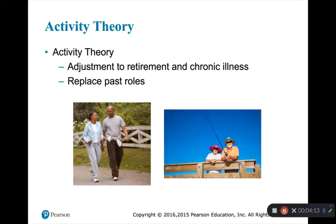Next we have activity theory. This theory talks about the adjustment to retirement and chronic illness by trying to retain your status, your roles, your activities and behaviors that you enjoyed in earlier life. Successful aging is continuing to do similar things you did before — if you're super active and extroverted, you'd want to keep being that way; if you're more introverted and loved reading and knitting, you'd want to keep doing those things. You would work to replace past roles and activities, or substitute if age-related changes make it difficult, perhaps replacing with age-appropriate activities that still fulfill that need but work within your limitations.